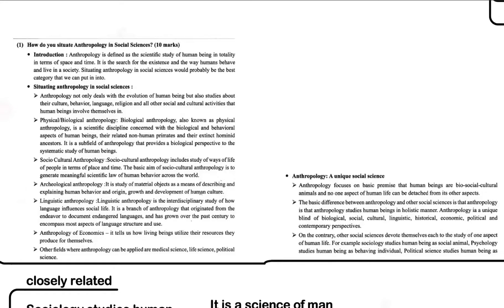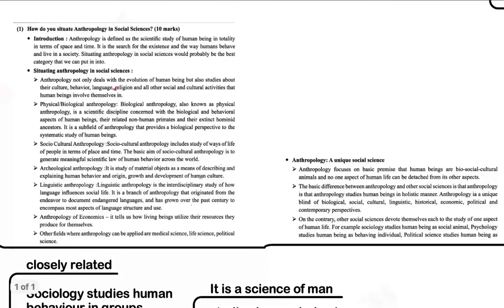When situating anthropology in social sciences, mention that it not only deals with evolution but also studies culture, behavior, language, religion — everything in the social and cultural context. Then cover the branches of anthropology. Physical or biological anthropology is a scientific discipline related to the behavioral and biological aspects of human beings and their relationship to non-human primates and extinct hominid ancestors, giving a biological perspective from the unseen past to the present.